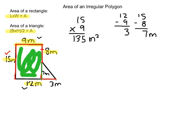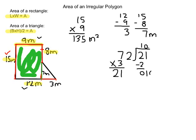We now have our base and height of the triangle. The formula is base times height divided by 2. To find the area of the triangle, we go 7 times 3 first, then divide by 2. 7 times 3 is 21, and 21 divided by 2 gives us 10.5 meters squared.